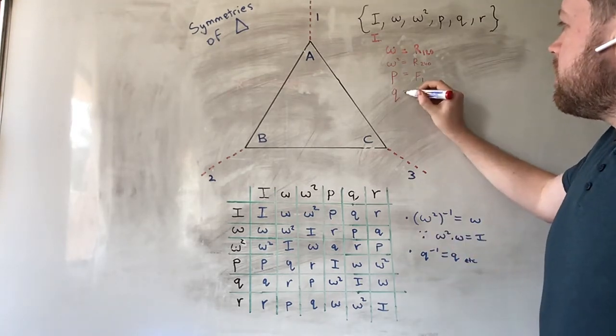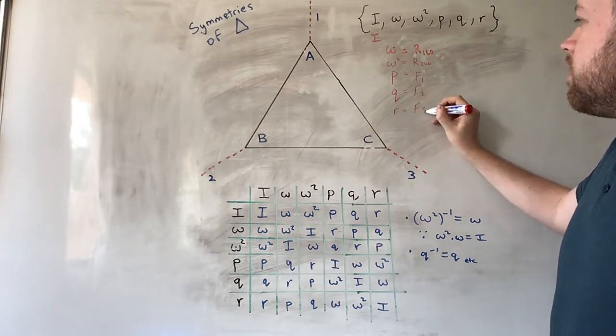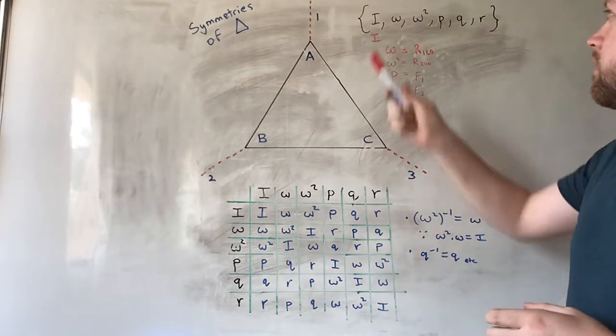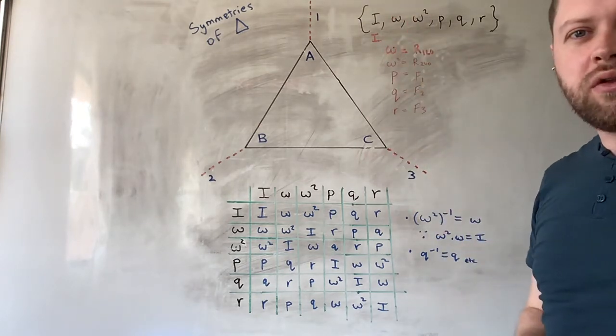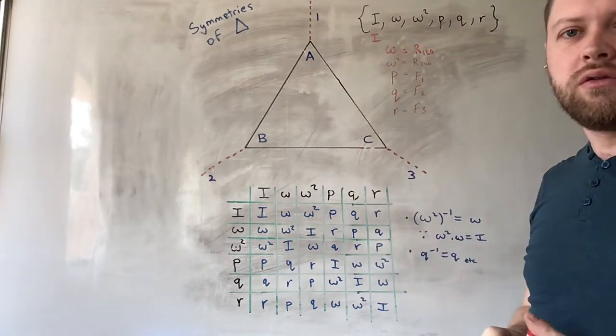Q is flipping it over axis 2, and R is flipping the triangle over axis 3. So this is the sum total of all possible symmetry transformations for the equilateral triangle.